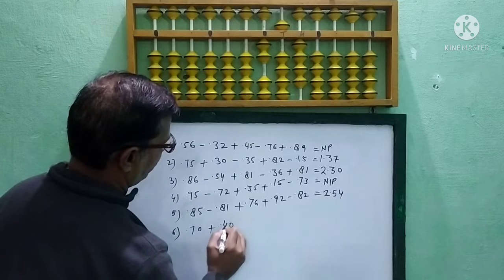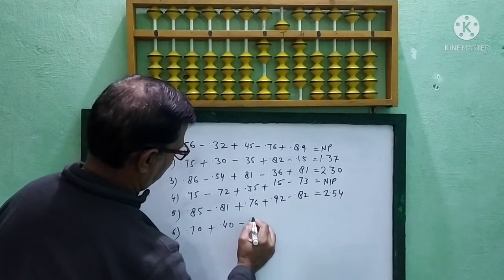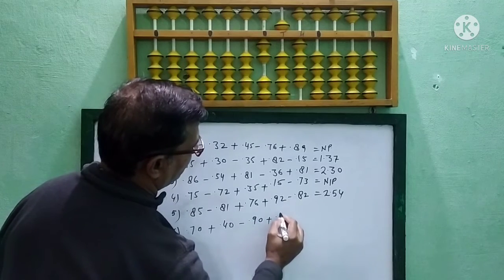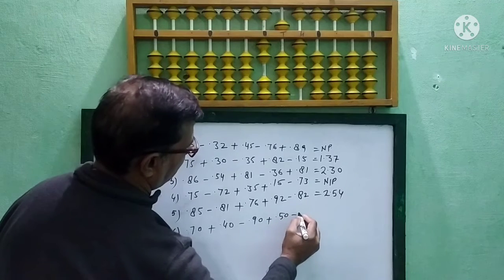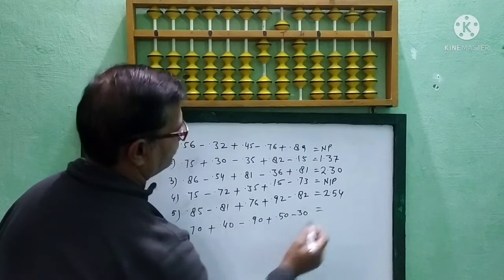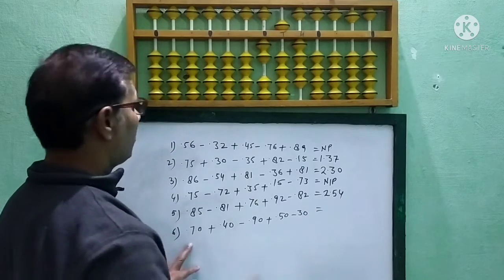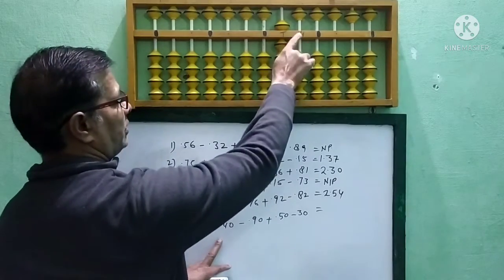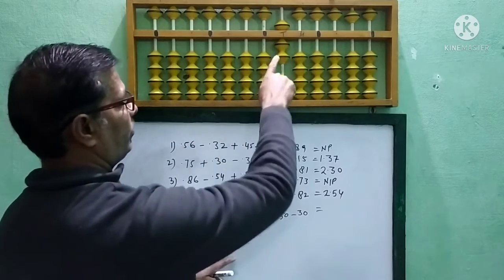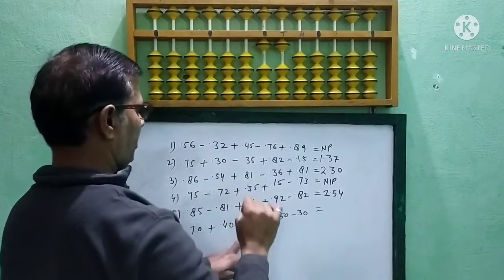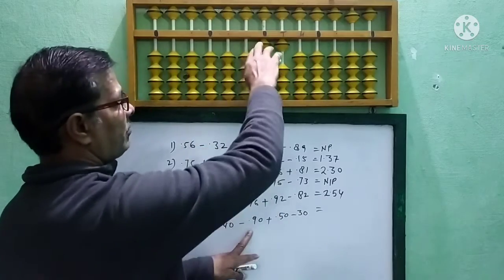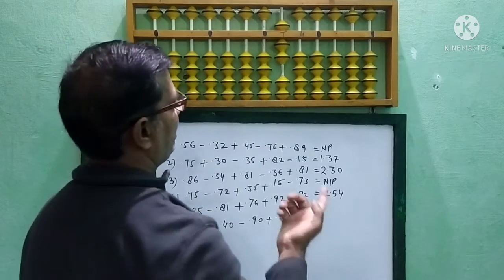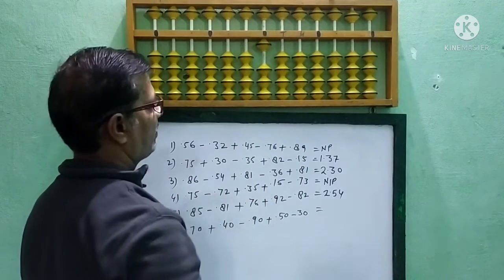One more question, this is the last question: 0.70 plus 0.40 minus 0.90 plus 0.50 minus 0.30. 0.70, 0 here point. Plus 0.40, plus 4 plus 10 minus 6, 4. Minus 0.9, 0.9 means minus 10 plus 1. Plus 0.5 direct. Minus 0.3, 3 plus 10 minus 7. Answer is 1.00.